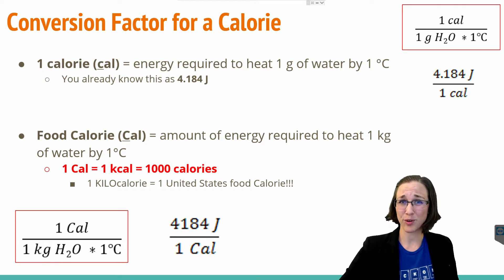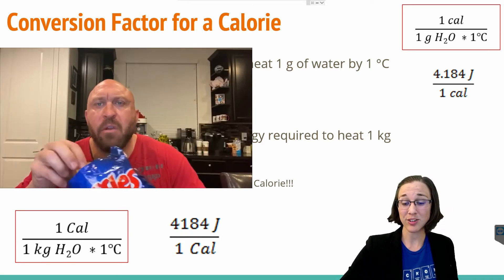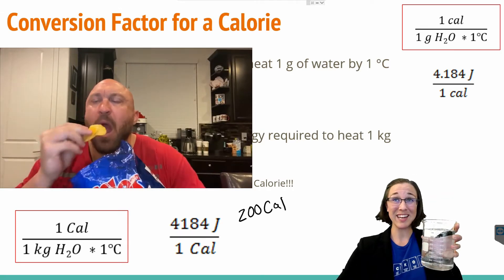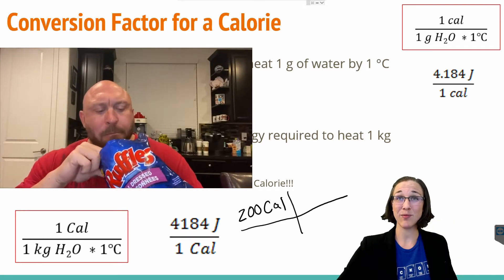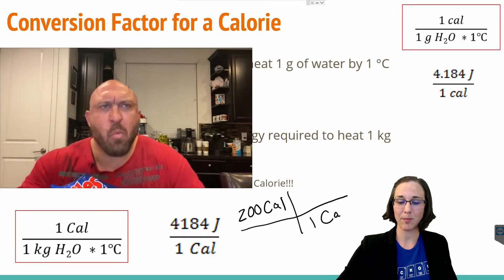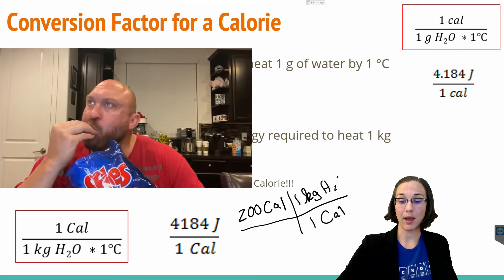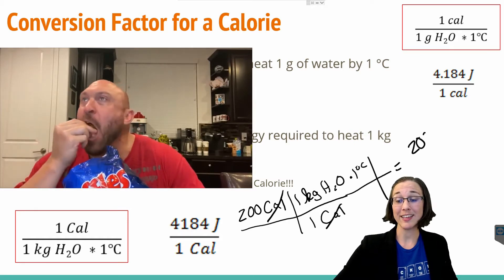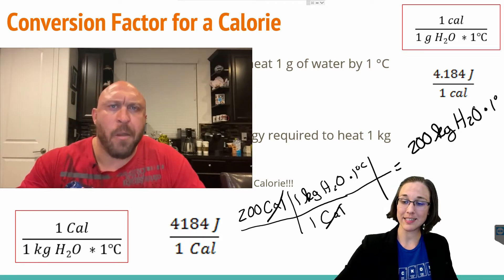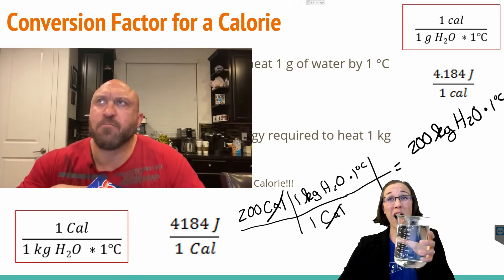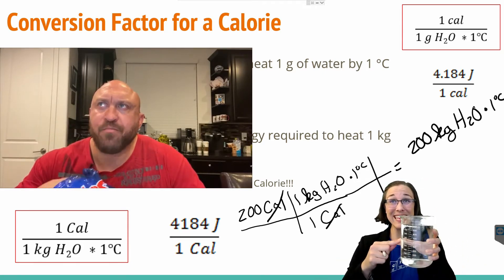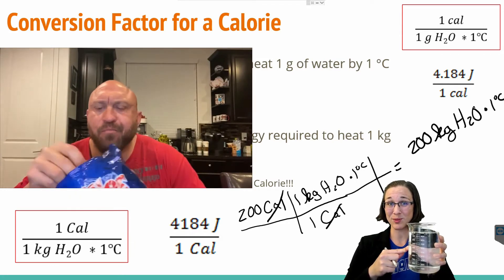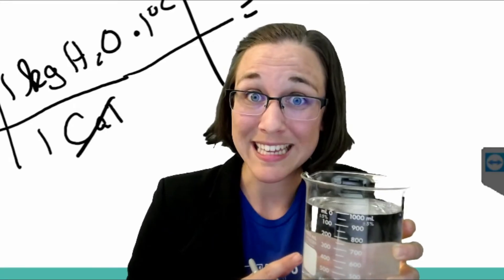So really let this sink in for a second. For example, if you were to eat 200 calories worth of potato chips in one setting, which is pretty easy to do, how much of this could it heat up one degree Celsius? If we need to cancel out the calories, we're going to put the one Cal on the bottom and one kilogram of water by one degree Celsius on top. We end up with 200 kilograms of water by one degree Celsius. In other words, you could take 200 of these beakers and heat them all by one degree Celsius by eating 200 food calories worth of potato chips. No really, let that sink in for a minute.